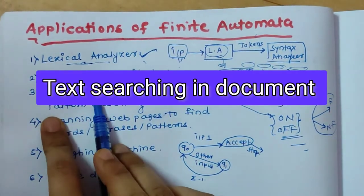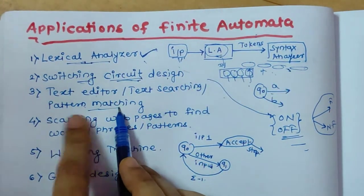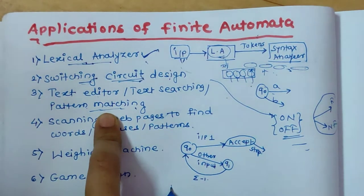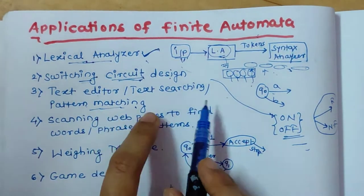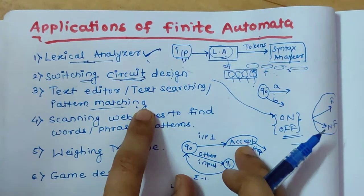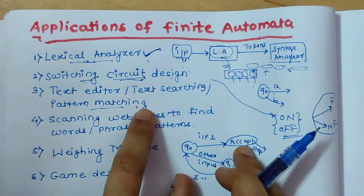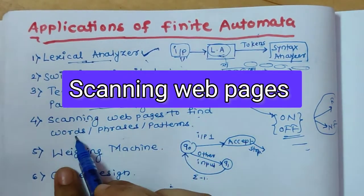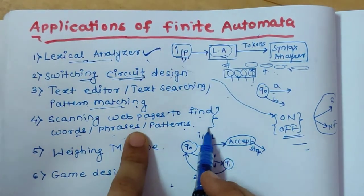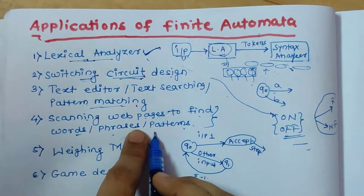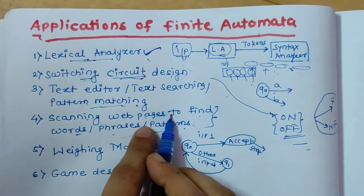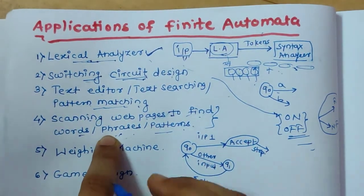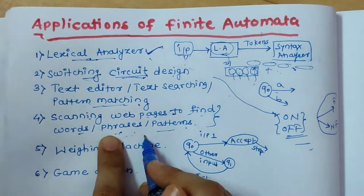The next application is text editor, or text searching, or pattern matching. If we are having a huge amount of data or a large amount of text, and in that text we need to search a particular word or match a particular pattern of string, we can use the finite automata concept. Similarly, for scanning web pages to find words, phrases, or patterns — keyword-based searching of web pages — we can use finite automata theory.